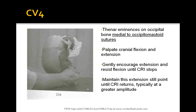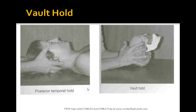The next technique is the vault hold. This is mainly used to modulate any kind of SBS strains by balancing membranous tensions. As seen in the picture, there is a posterior temporal hold and a vault hold shown. To perform the vault hold, the patient is placed in a supine position. The clinician places his thumbs in a manner that crosses over but does not touch the sagittal suture — that's an important point.